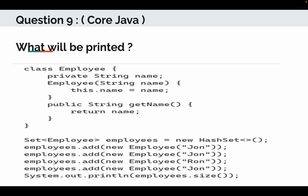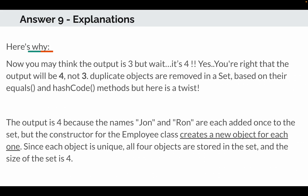Question number 9 was a code-based question. There is a class Employee where a private field variable name is defined as a String, a constructor with a name parameter, and a getName method. A Set of type Employee is declared with four elements added: John, John, Ron, and John. A sysout statement prints the employee store size. I provided the wrong answer, but the correct answer is four — not three as you might expect.